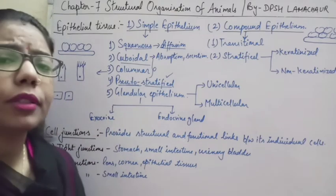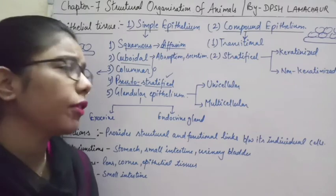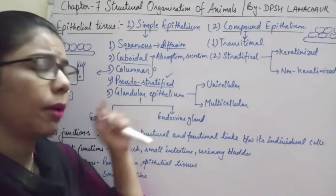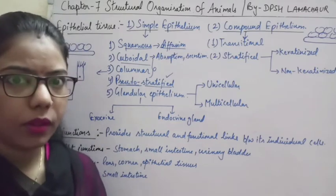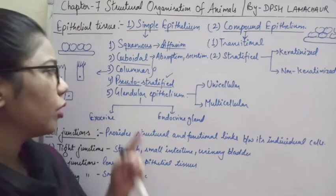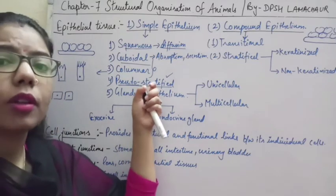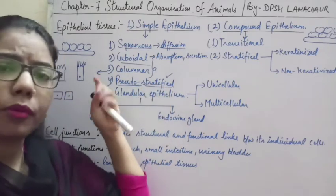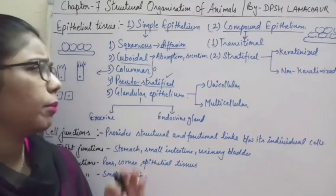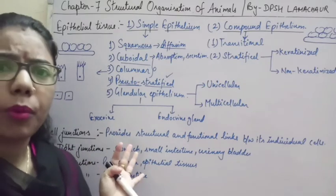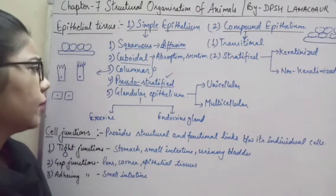Pseudo-stratified epithelium can be found in the trachea. Make sure you know the location where each type of tissue is found, as these are important questions for MCQs.